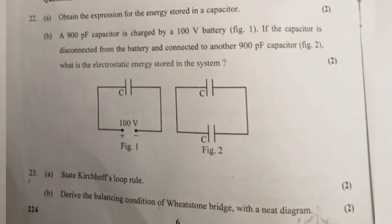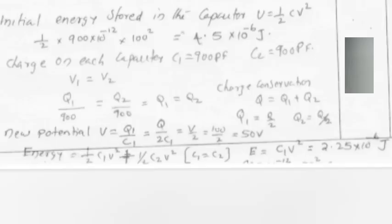Part B: A 900 pF capacitor is charged by a 100V battery. If the capacitor is disconnected from the battery and connected to another 900 pF capacitor, what is the electrostatic energy stored in the system? Initial energy stored in the capacitor: U equals half CV² equals half times 900 times 10⁻¹² times 100² equals 4.5 times 10⁻⁶ Joules.